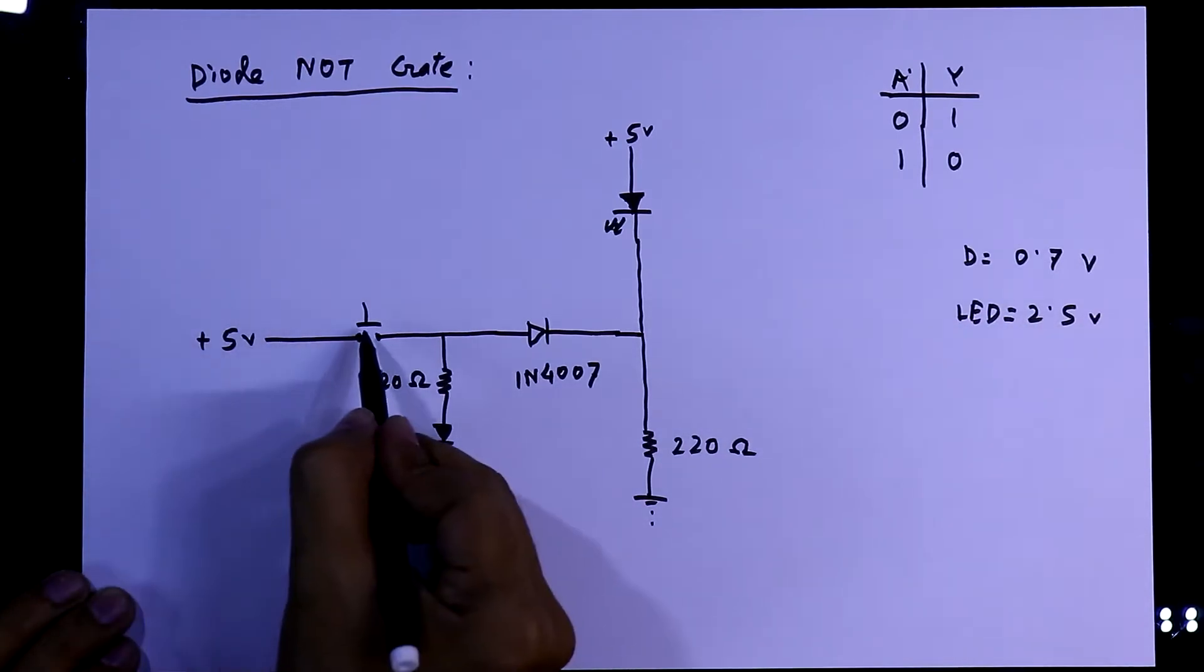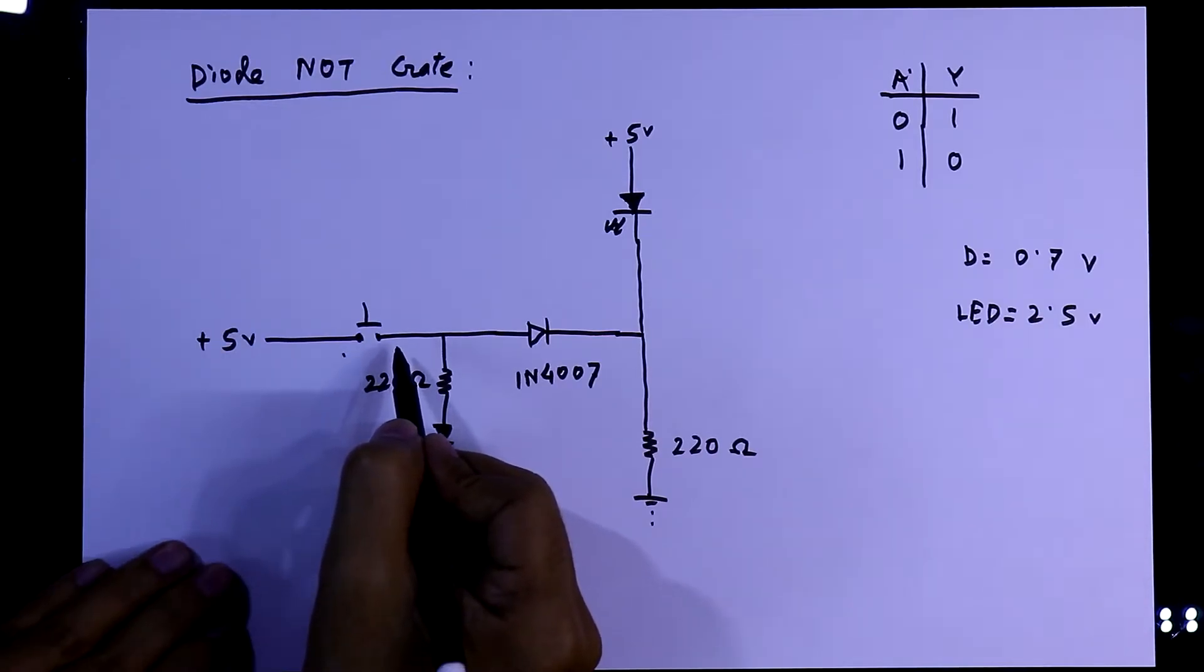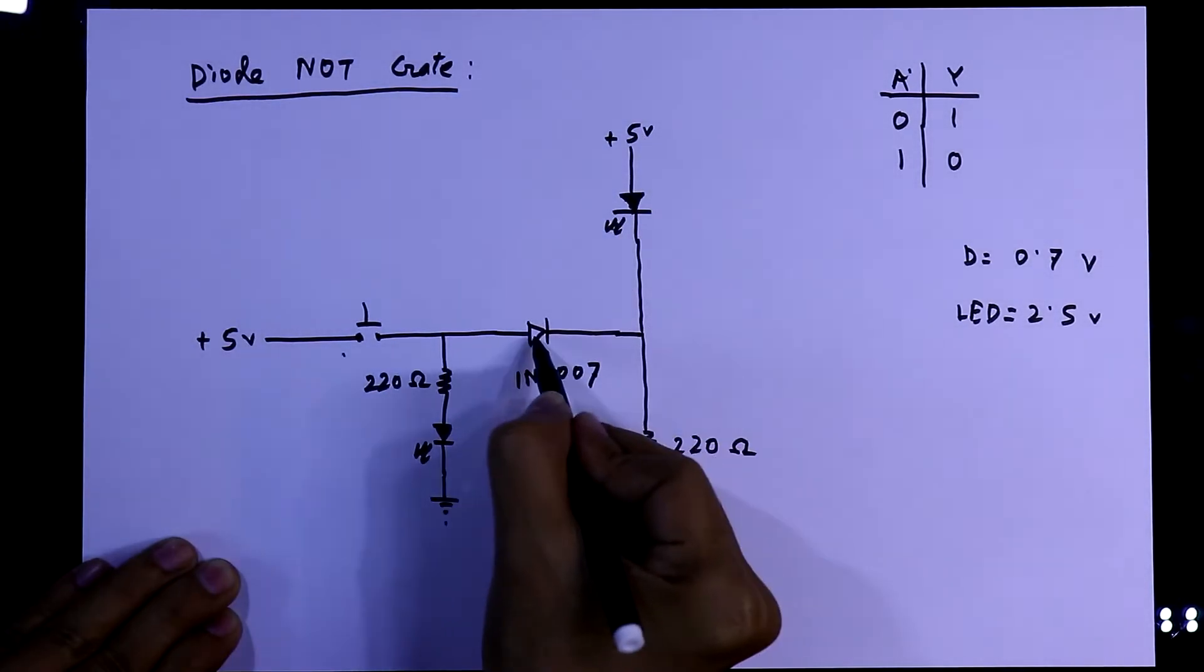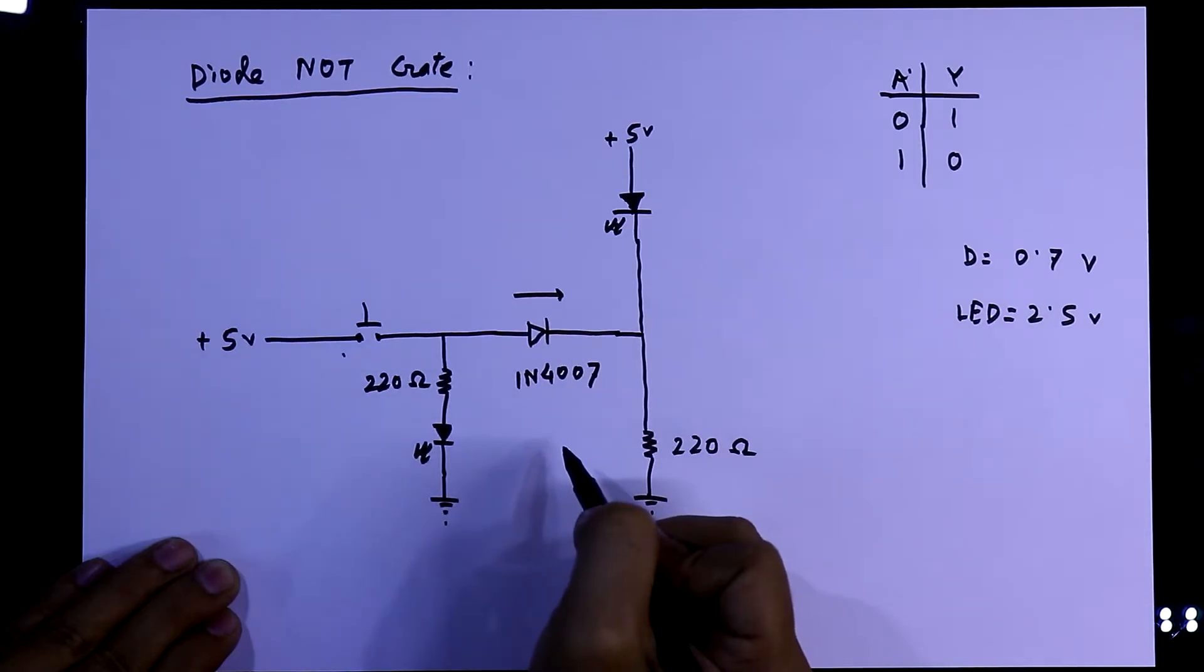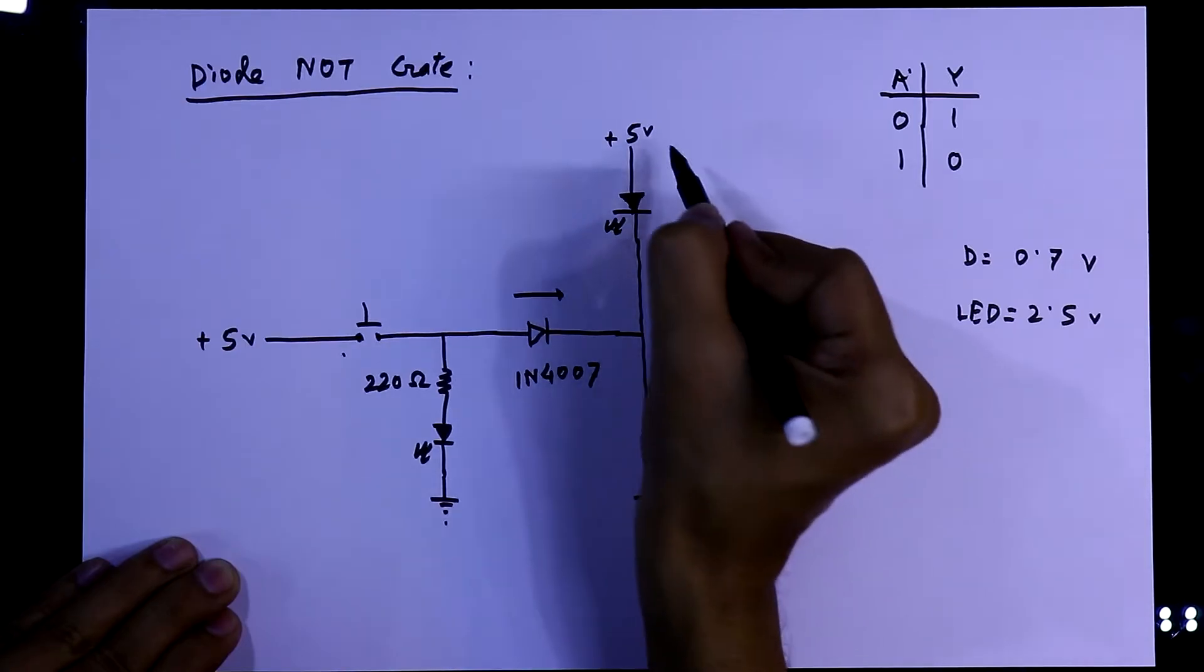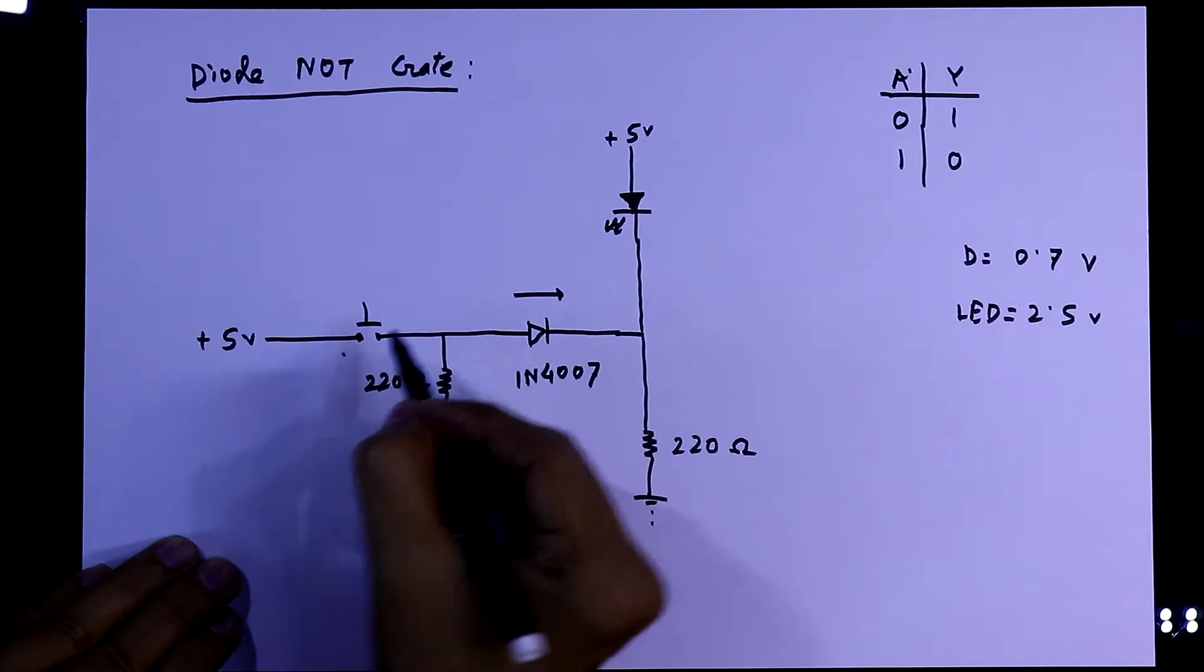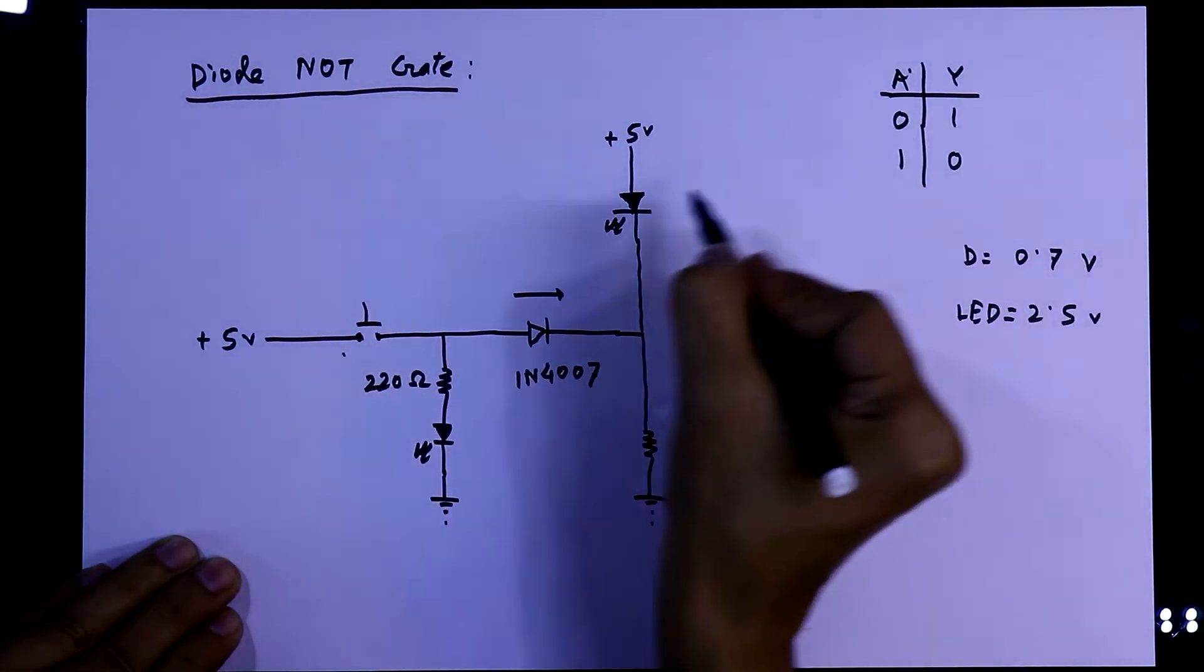When the switch is off, then no current will flow through this. So the only way for current to flow is from this 5 volt to the ground. Current cannot flow in reverse direction because the forward bias is in this direction. So in short, we can say that whenever the switch is off, then this LED will glow. So when the input is 0, then output will be 1.